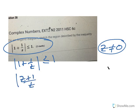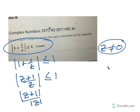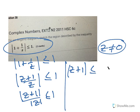So you have 1 + 1/z less than or equal to 1, which gives |z+1|/|z| ≤ 1, so |z+1| ≤ |z|.